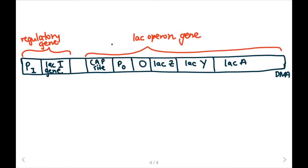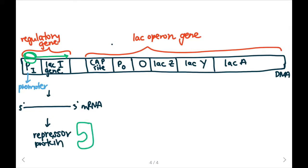And the components of the regulatory gene are a promoter and then the actual lac I gene that it's going to transcribe. So when RNA polymerase binds to the promoter, it's going to transcribe the lac I gene and then produce a 5' to 3' mRNA that's going to code for the repressor protein. And this repressor protein will essentially determine when the lac operon is turned on or off.